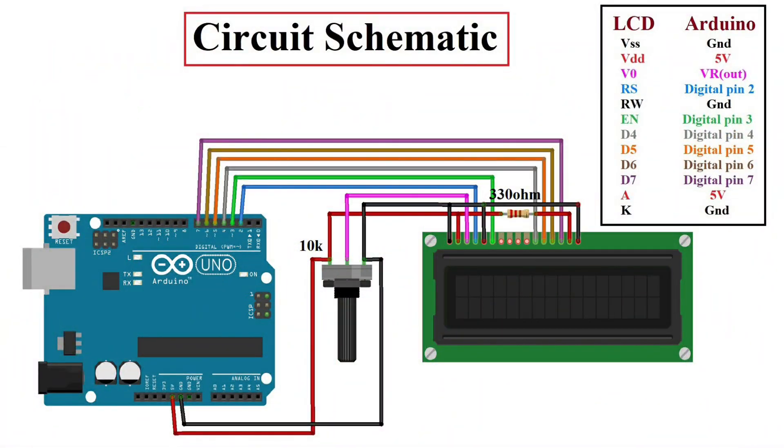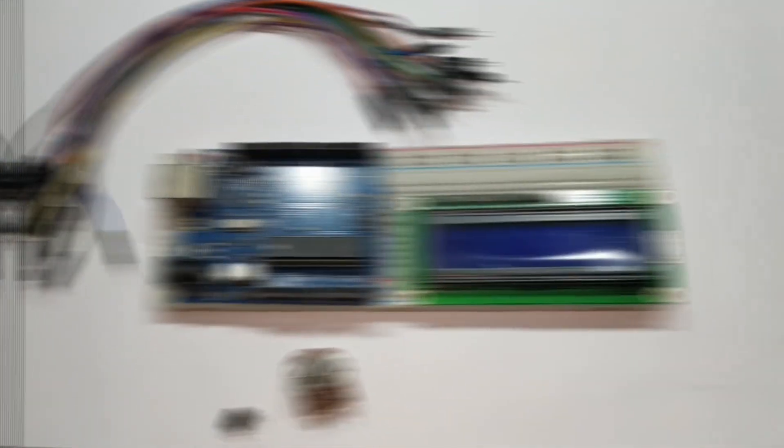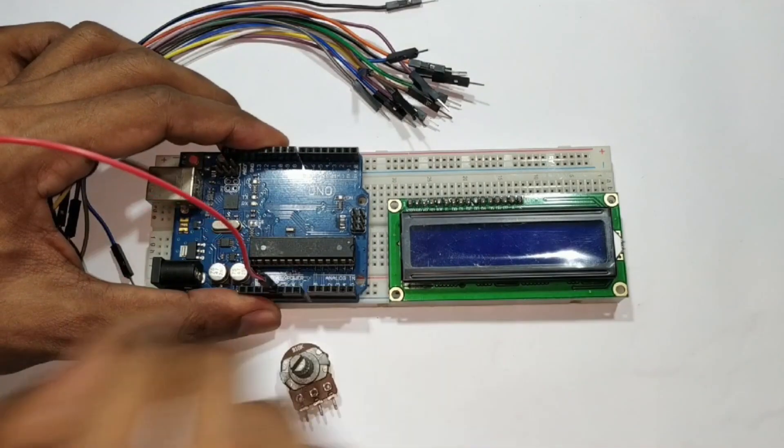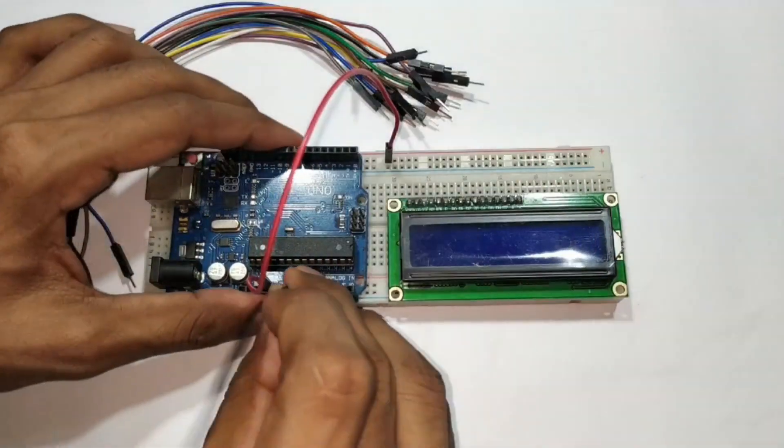This is the circuit schematic for this tutorial. The link of this schematic I will give below the video description. You can easily download the schematic from the link. First of all, I am connecting the Arduino 5-volt and ground pins with breadboard, positive and negative terminal.